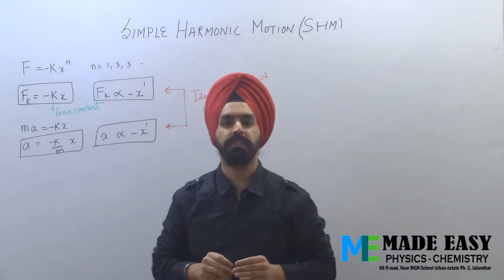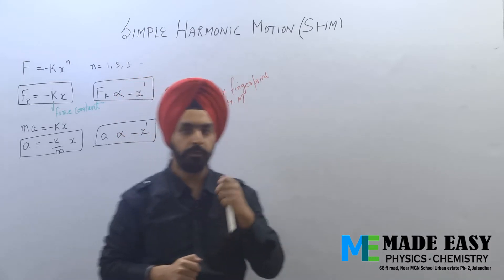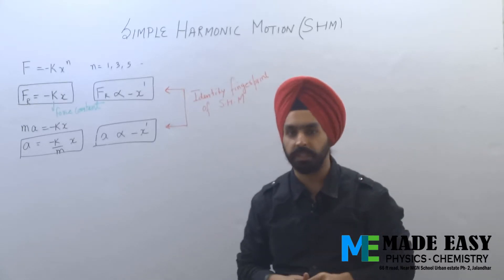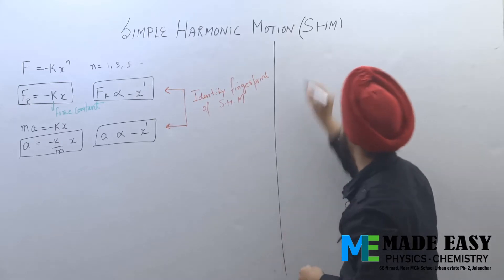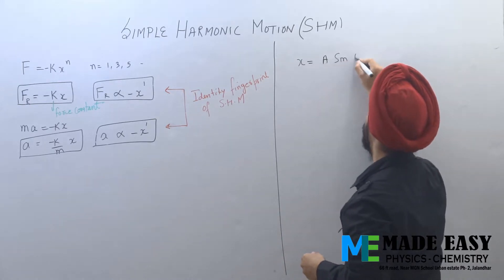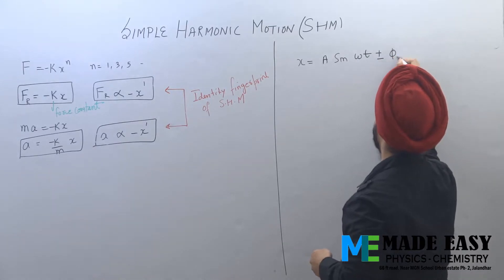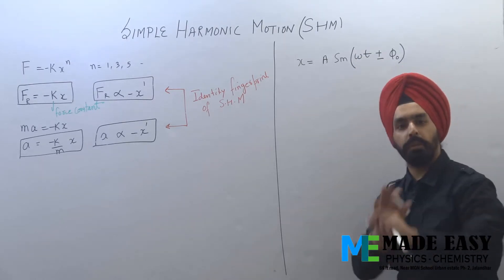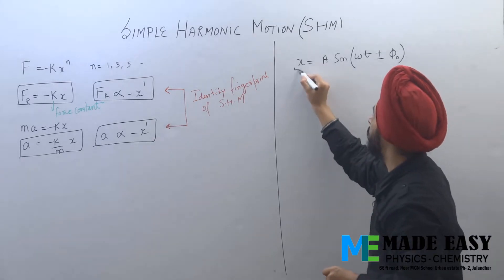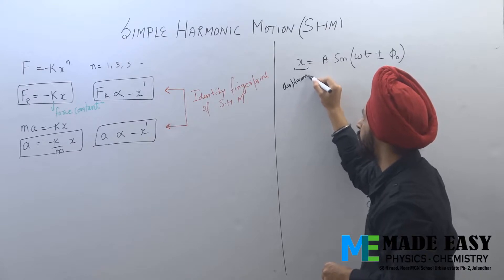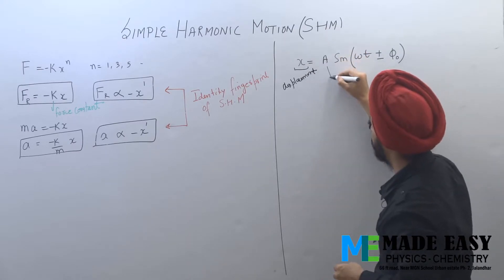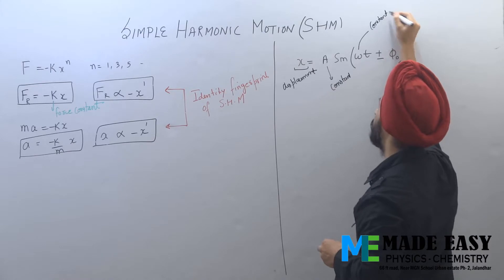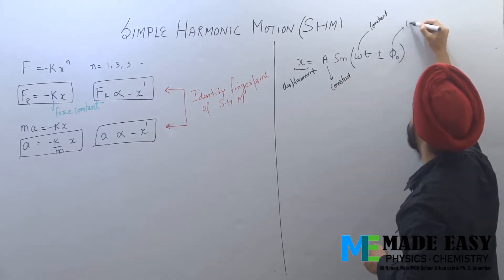Now for a few minutes, forget about SHM. Let's focus on a small mathematical part. Don't try to relate with this. Later we'll see if there's any relation or not. Focus on the mathematics. If I write an equation: x is equal to A sin omega t plus or minus phi naught. What is the meaning of this equation? Don't go into this. Just understand a few things: x represents some kind of displacement. A is some constant, omega is also some constant - 2, 3, 4, 5, anything. Phi naught is also some constant and t is time.